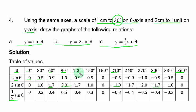You check sin 120° divided by 2 and get 0.4 to one decimal place. You check sin 270° divided by 2 and get minus 0.5. You check sin 330° divided by 2 and get minus 0.3. So we now have all the values for all three functions. Next is to plot them one after the other.